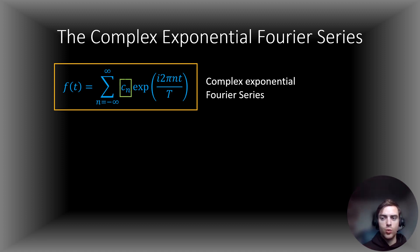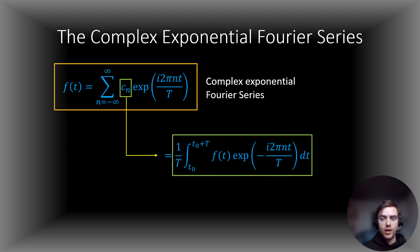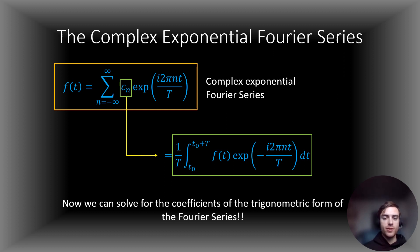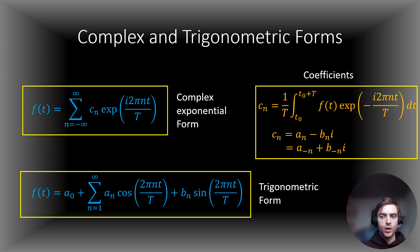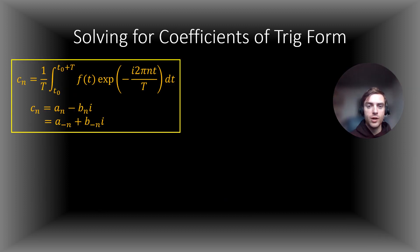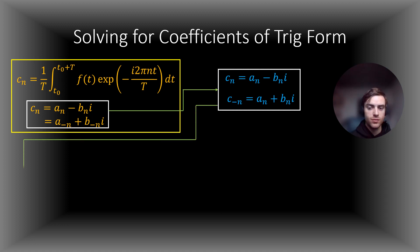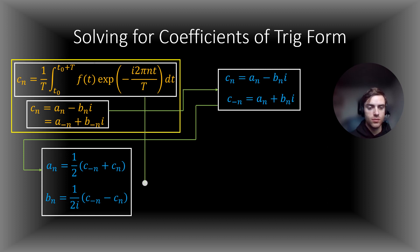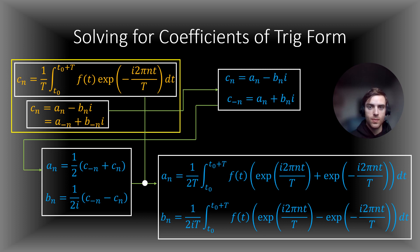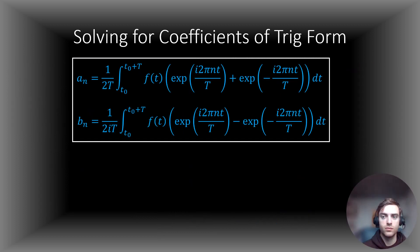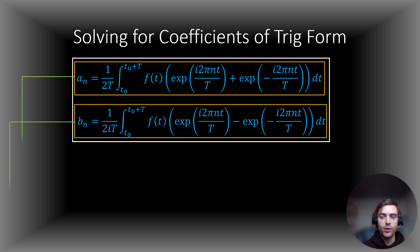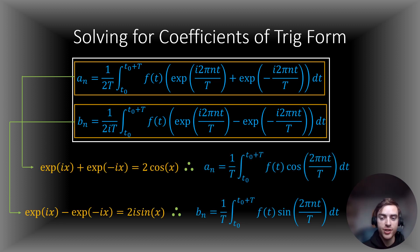So now that we have the values of c_n, we can use this information to solve for the constants of the trigonometric Fourier series — a_n and b_n. On this slide we summarize the information we have discovered so far. We will now proceed to solve for a_n and b_n using the values for c_n. Now we have solved for a_n and b_n, and all we need to do is simplify them using the following identities. And there you have it — you have the simplified forms for a_n and b_n of the trigonometric Fourier series.